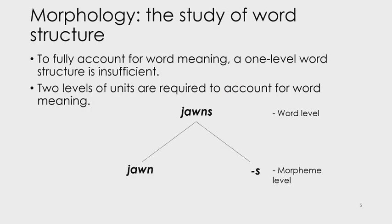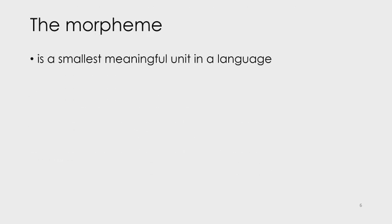What the John phenomenon goes to show is that a one-level structure is insufficient to account for word meaning. A two-level structure is required to fully account for word meaning, and such a study of word structure is what we call morphology. At the base of this particular structure that you see is the morpheme level.